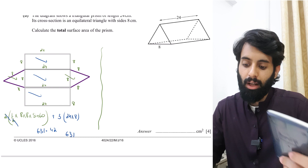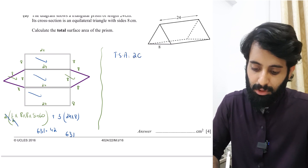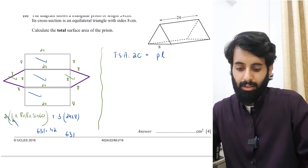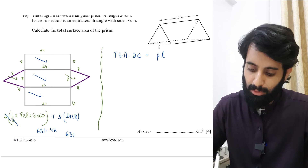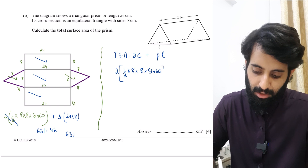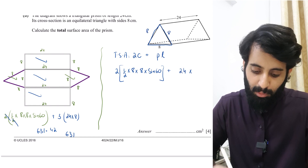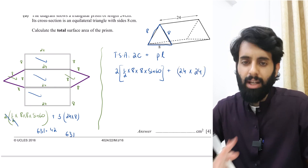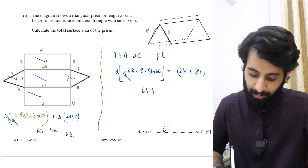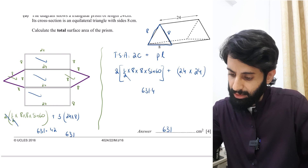Alternatively, using the prism surface area formula: 2C + (perimeter of cross-section × length), where C is the area of cross-section. So: 2 × (½ × 8 × 8 × sin 60°) + (8 + 8 + 8) × 24 = 2 × (½ × 8 × 8 × sin 60°) + 24 × 24. This also gives 631.4 cm², which to three significant figures is 631 cm².